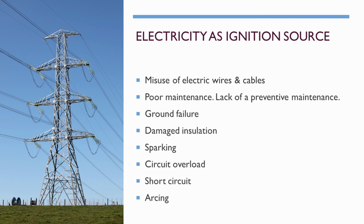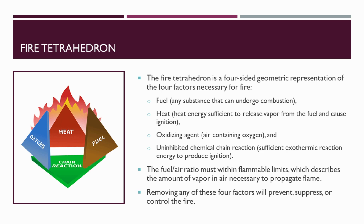That covers the fire triangle. Next is the fire tetrahedron, which is a four-sided geometric representation of the four factors necessary for fire: fuel (any substance that can undergo combustion), heat, oxygen — these three we already know — and the fourth new element, which is called the uninhibited chemical chain reaction. All four elements together form the tetrahedron.